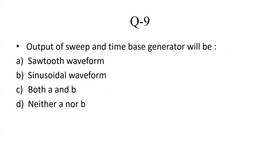The next question is based on time-based generator. The output of a sweep and time-based generator will be: Option A — saw-tooth waveform; Option B — sinusoidal waveform; Option C — both A and B; Option D — neither A nor B. The waveform of sweep circuits and time-based generators is a saw-tooth waveform. So the correct answer is Option A: saw-tooth waveform.